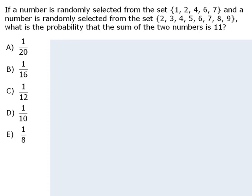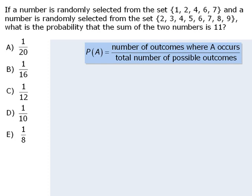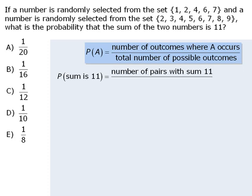Since this experiment has countable outcomes, we can use the probability formula. So the probability that the pair of selected numbers add to be 11 is equal to the total number of pairs that add to be 11 divided by the total number of possible pairs.